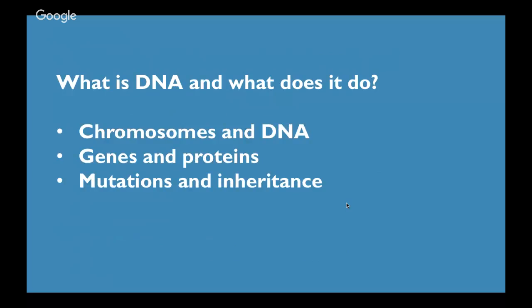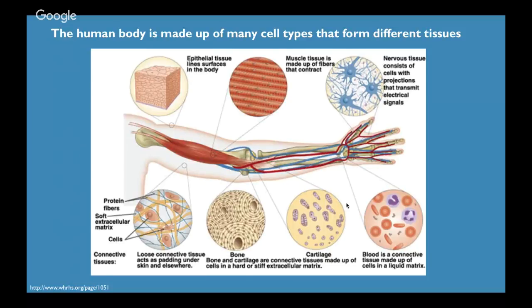To get started, what is DNA and what does it do? The human body is made up of many cell types that form different tissues. One important thing to remember is that all of these cell types, no matter what they are, if they're in the same body, they all have the same DNA. Because they are in different tissues, they form different functions. We have various cell types — from epithelial tissue that lines the surfaces of your body, to blood cells, nerve tissue, and connective tissue.